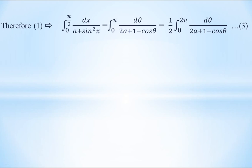For Type 1, the limit should be from 0 to 2π, but here the limit is from 0 to π. We can write the integral from 0 to π as (1/2) times the integral from 0 to 2π, which is of the form integral from 0 to 2π of a function of cos θ dθ. So this is of Type 1, and the procedure is to convert the integral in terms of z and apply the residue theorem.